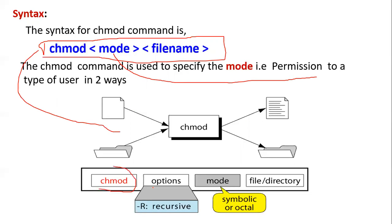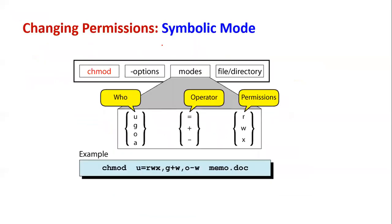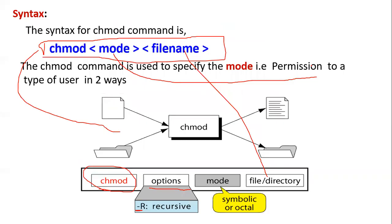Options can be a hyphen associated with a single or double letter. The mode can be symbolic mode or absolute mode. Then followed by the file or directory name. In today's class we will see only about symbolic mode — where symbols are used to represent permissions.